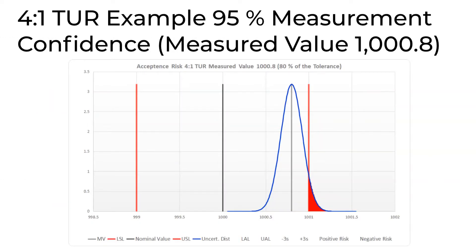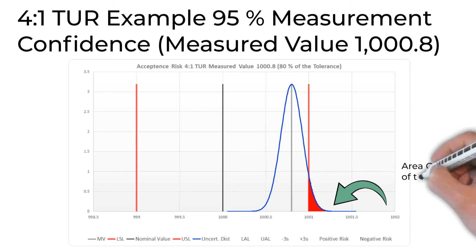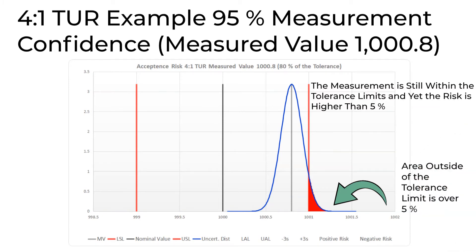Now the measurement location of the process has moved. Many would consider the location well within tolerance and perfectly safe. However, when considering the new location, measurement risk may no longer be trivial. The area of the distribution beyond the tolerance limit is 5.8%. At this point, measurement risk is process risk, and there is a 5.8% chance you are calling something good when it is bad. This is noted by a CPK of 0.533.